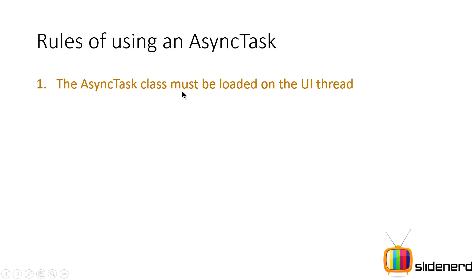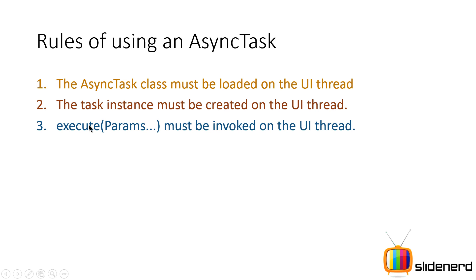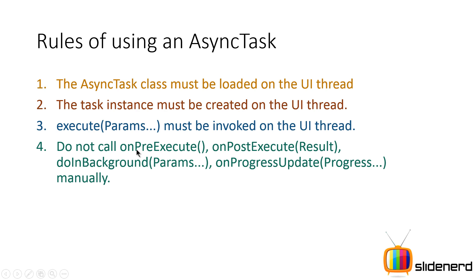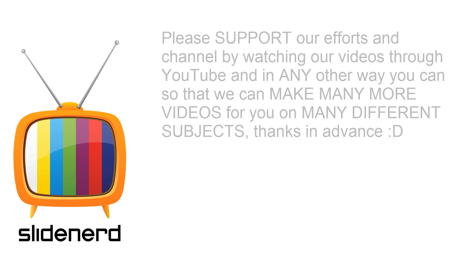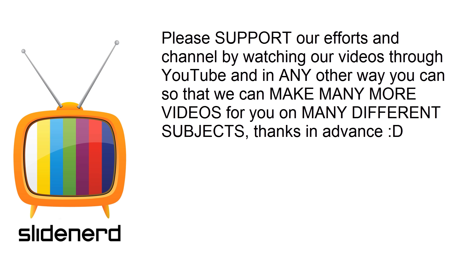There are certain rules for using AsyncTask. The AsyncTask class must be loaded and its object created on the UI thread. Execute must also be invoked on the UI thread. You cannot call onPreExecute, onPostExecute, doInBackground, or onProgressUpdate manually — they are called automatically, just like the Activity lifecycle. Also, a task can only be executed once; you must create a new AsyncTask instance each time, otherwise an exception will be thrown.